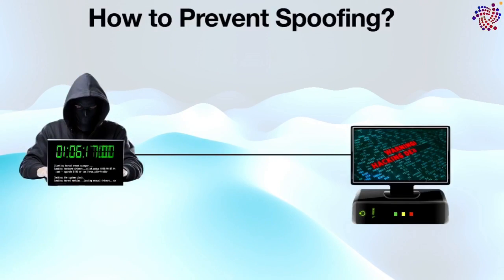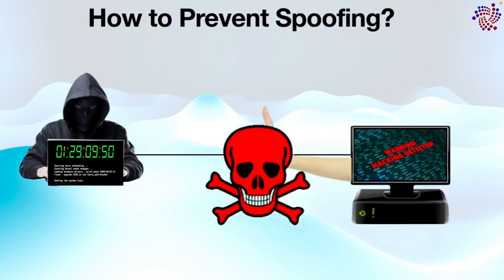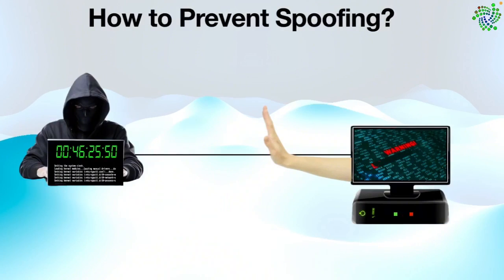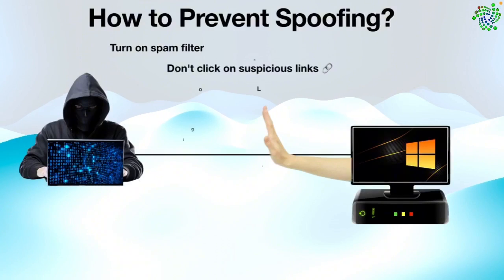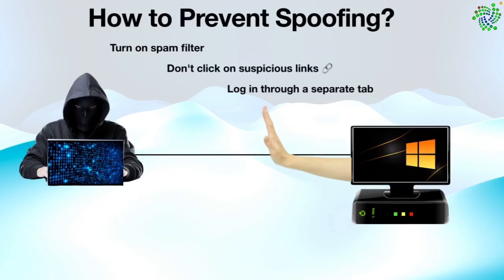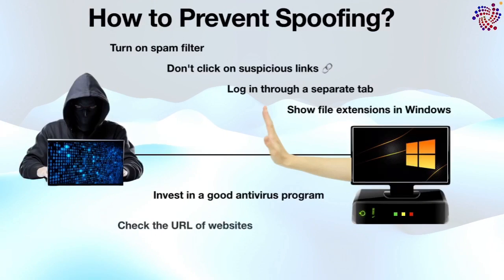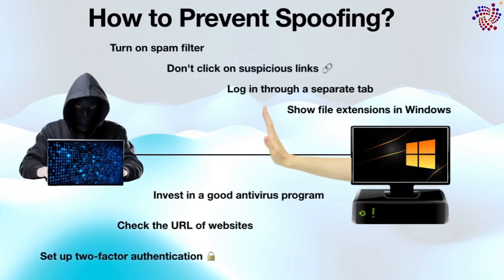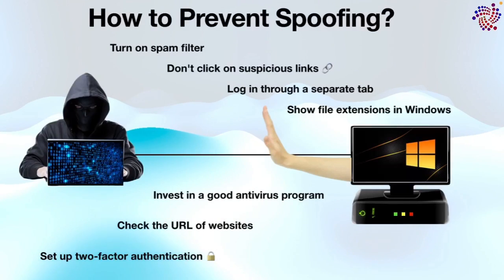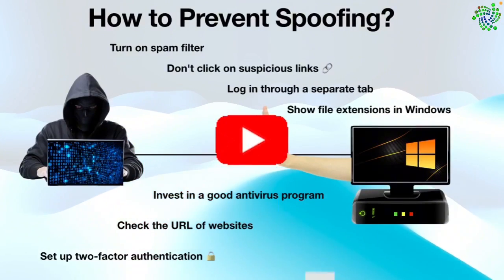Now, how do you prevent a spoofing attack? There are many ways to protect yourself: turn on your spam filter, don't click on suspicious links, log in through a separate window, show file extensions in Windows, invest in a good antivirus program, check the URL of websites, and set up two-factor authentication to protect your online accounts. That wraps up today's video — thanks for watching, please hit the subscribe button.